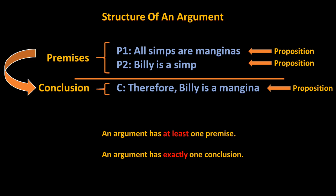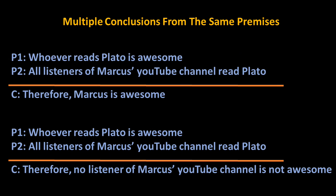Of course, it is sometimes possible to draw two conclusions from the same premises. In such a case, however, we speak of there being two arguments. Consider an example. Let us adopt the following set of premises. Premise 1: Whoever reads Plato is awesome. Premise 2: All listeners of Marcus' YouTube channel read Plato — at least they goddamn well better.